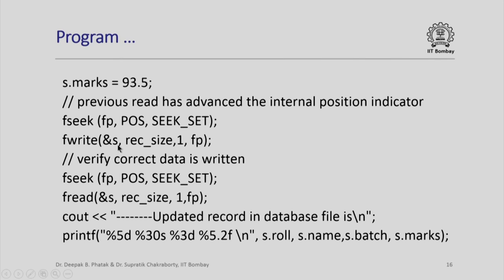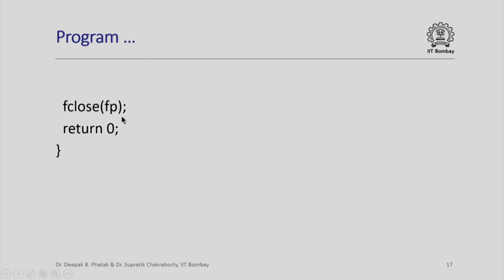We simply fseek again to the same pos which was issued when we wanted to read this record. We know that at this point, Nilamani Rauch's record begins. The file pointer is actually brought back to the beginning of this record. Now, when I write, the old record is rewritten with the new values in this structure variable s. Note that s.marks is now 93.5. Are we sure that a new value has been written? It is simple to verify. I again do an fseek. Please note fwrite will also advance the internal file pointer by one record, so we bring it back by using fseek again and read this record. When I output the updated record, I will know whether the updation has happened correctly or not. At the end, I close this file and return with a 0.